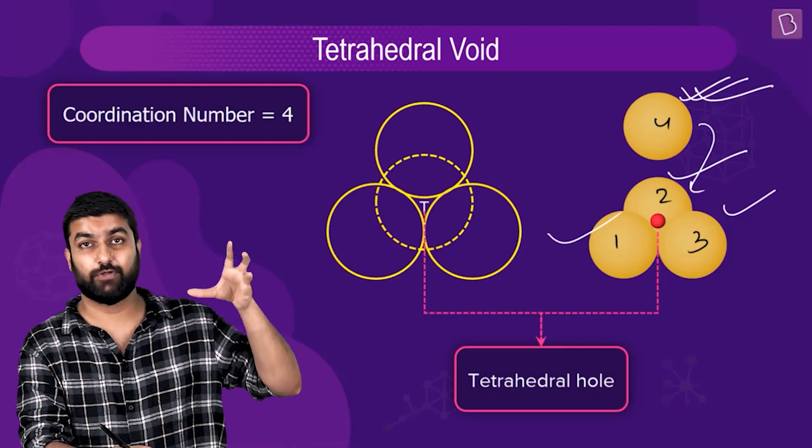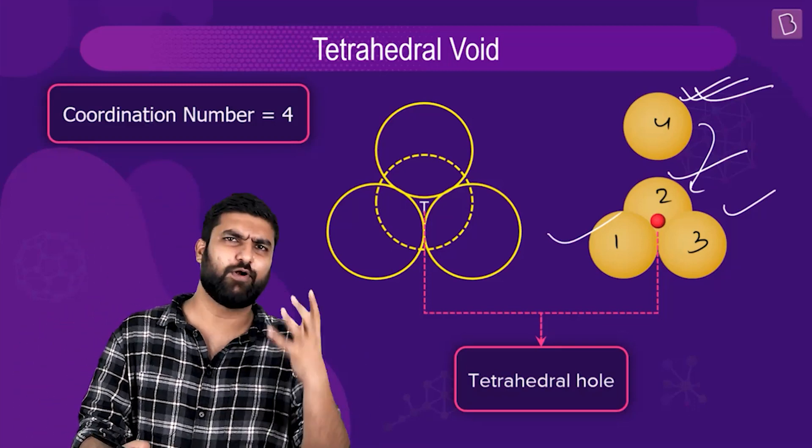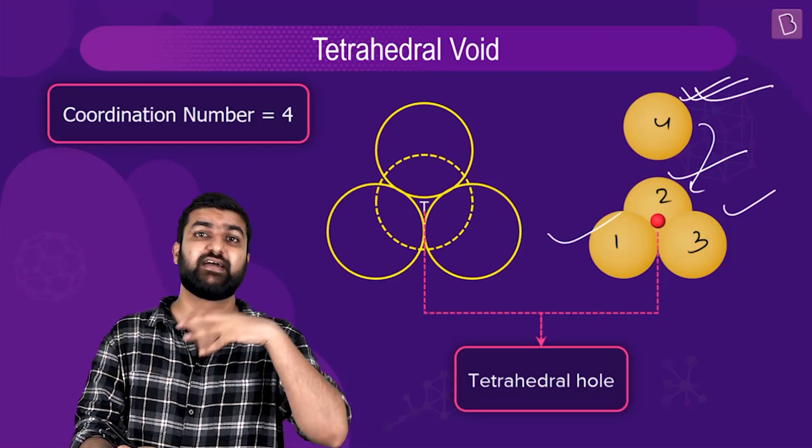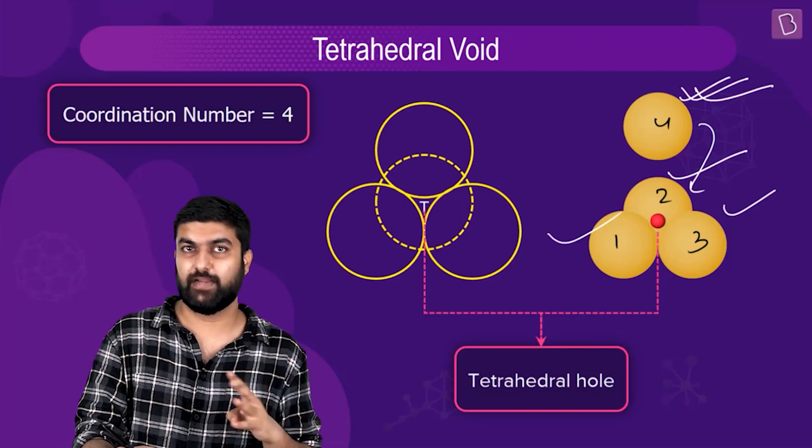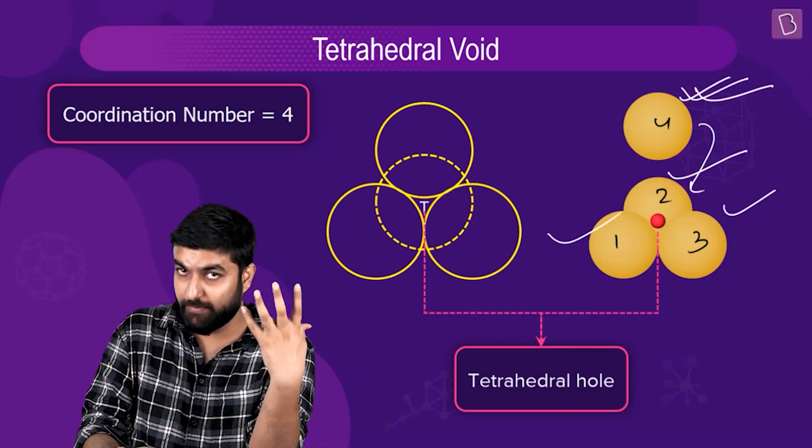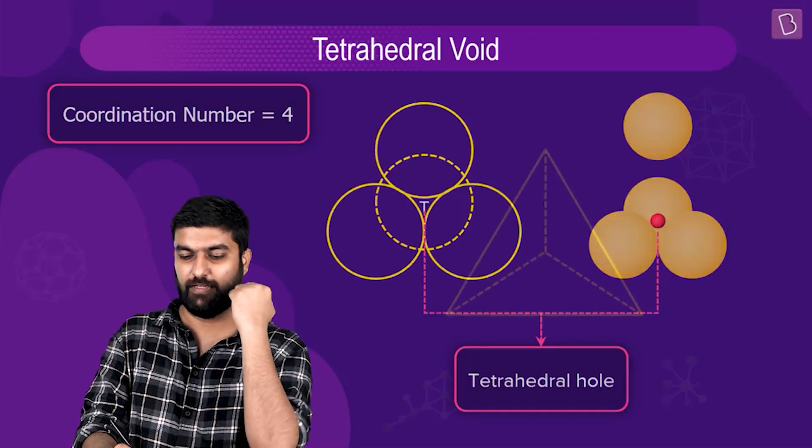The coordination number becomes equal to four. The four particles will be surrounding it, being its nearest neighbors, making the coordination number four. All right, so let's begin. We have something like this - a tetrahedron. Before we move on to the mathematical part...